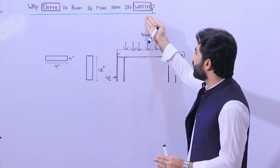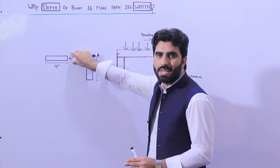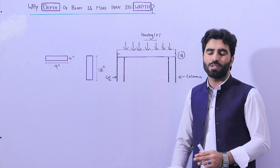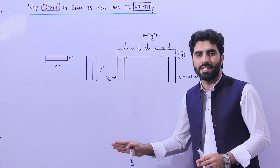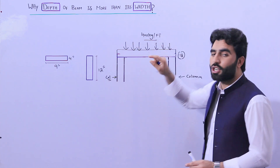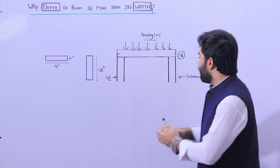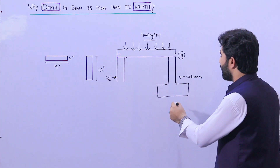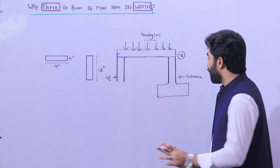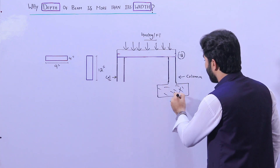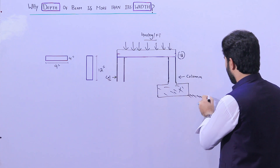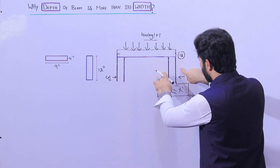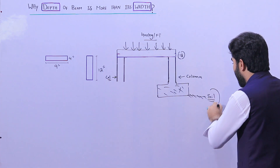This is a short video to explain why the depth of a beam is more than its width — because 4 inches cannot resist the applied load, so it should be greater. When the load comes on top of the beam, the beam transfers the load to the columns; the columns transfer the load to the footings. As you can see, these are footings, and the footing transfers the load to the soil.